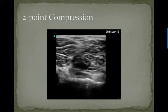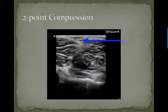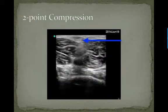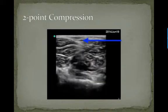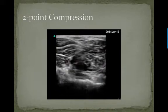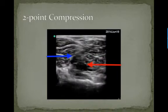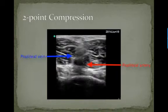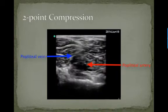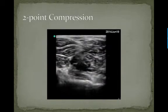However, the superficial veins do not run next to arteries, so that's a good clue that you're looking at the right vessels if you see an artery. In this example, we can see the popliteal vein sitting on top of the popliteal artery, and it is completely compressing.